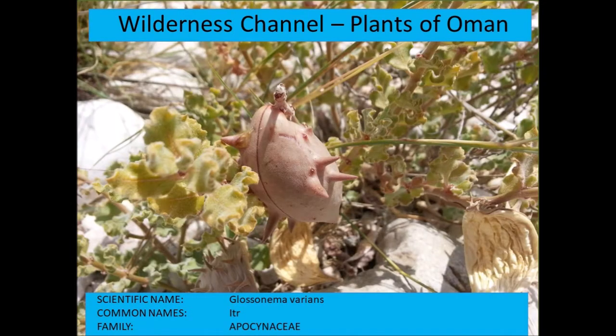Glossonema varians — this has an edible spiny-looking fruit. It's a very small and difficult-to-find bush, so quite a delight to find one.